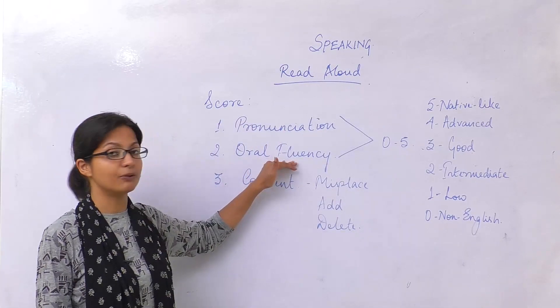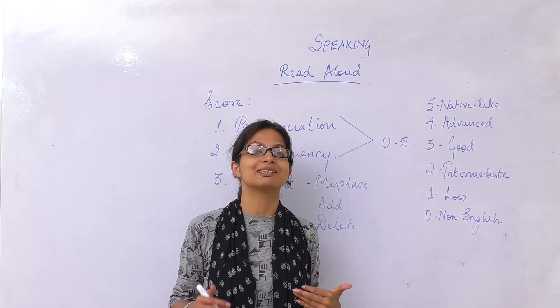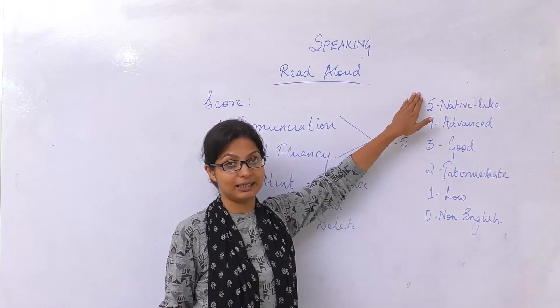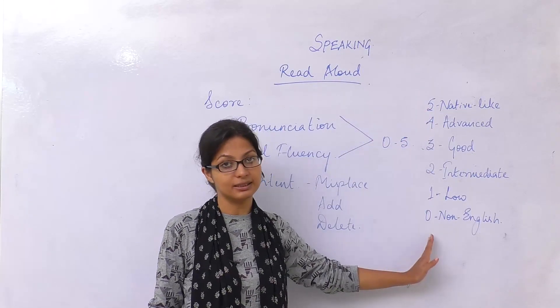Same with oral fluency. By fluency, what I mean is pace. If your pace is native-like, you get a 5, and it hence goes down to 0.